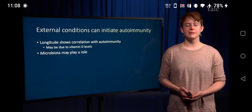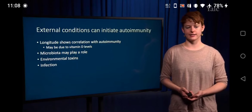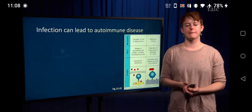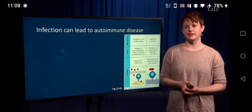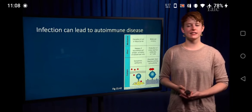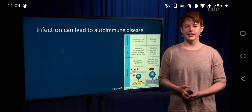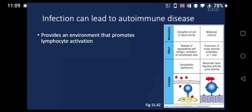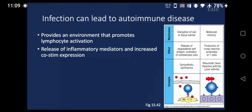We'll first talk about infection, and I want you to think about twin studies. Identical twins share a genome, however it's not guaranteed that if one twin develops an autoimmune disease, the other will also develop it — so there has to be something else going on. Infection provides a pro-inflammatory environment that can help promote lymphocyte activation overall, with increased release of inflammatory mediators and increased expression of co-stimulatory molecules. This can actually lead to bystander activation of self-reactive lymphocytes.